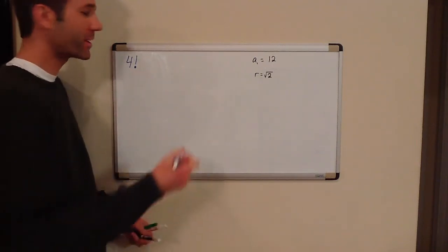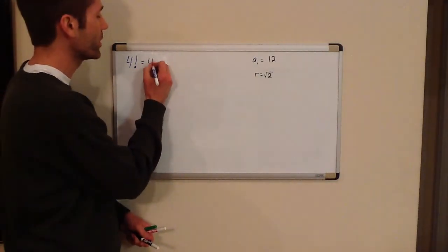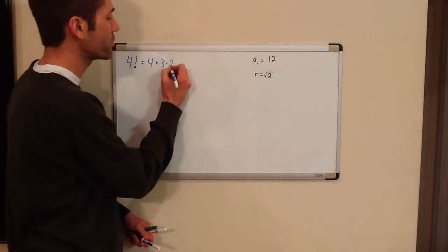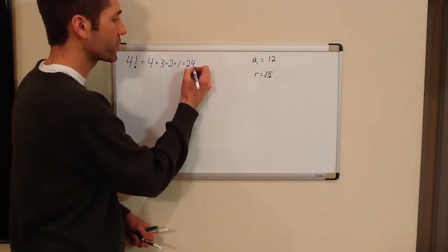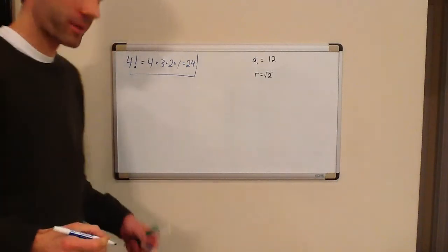It's 4 factorial. I just wanted to take this opportunity and refresh your memory. 4 factorial is 4 times 3 times 2 times 1, which equals 24. This is problem 24. There we go. Let's get started.